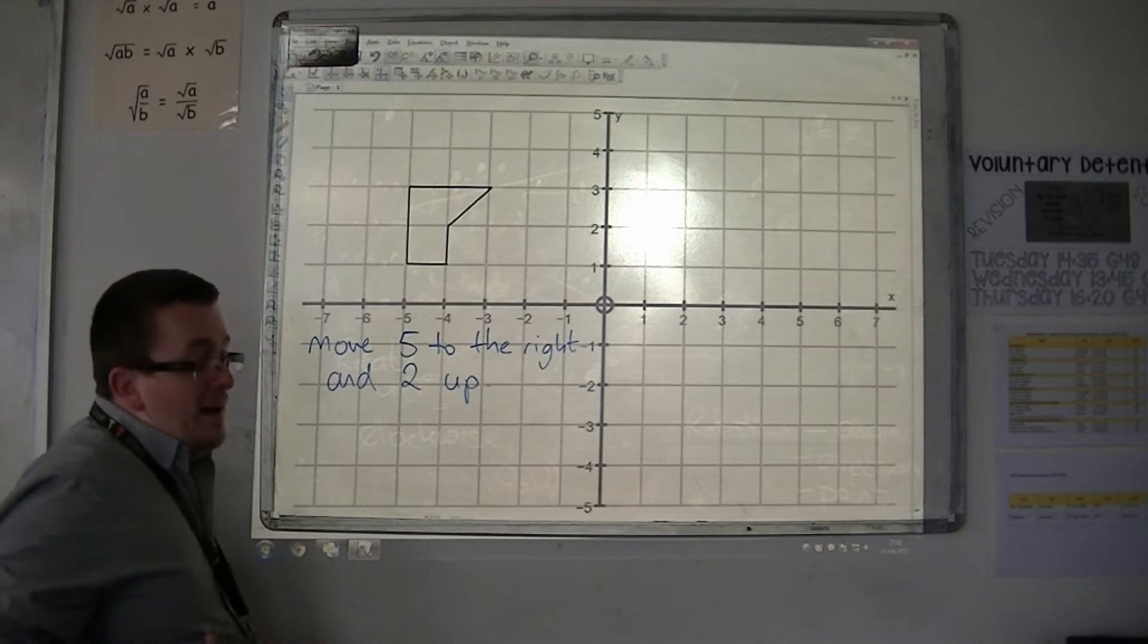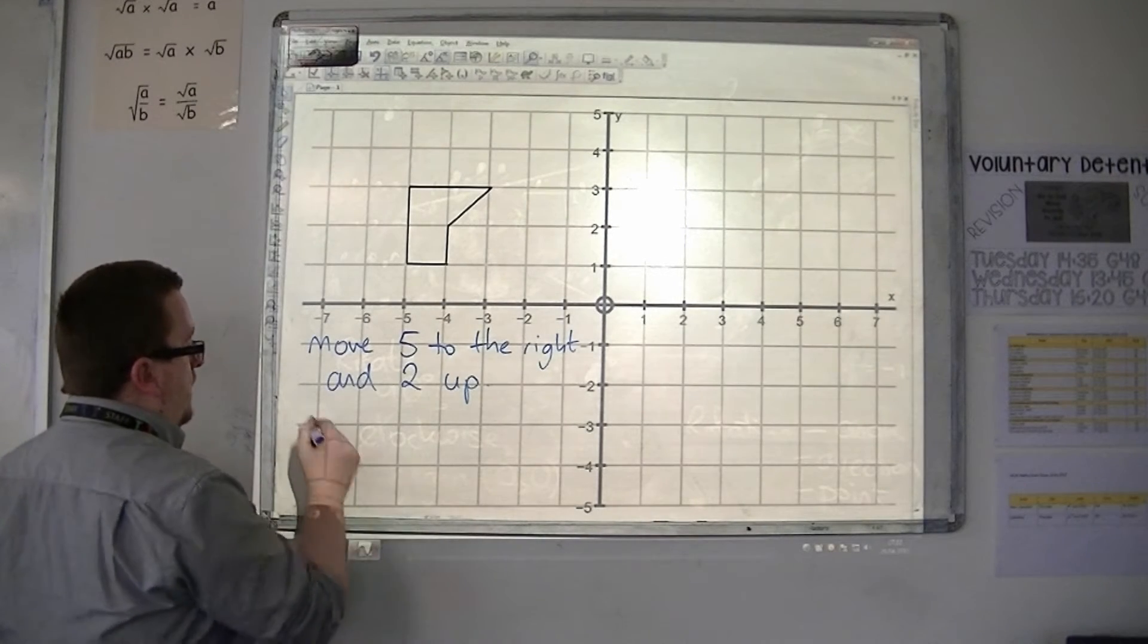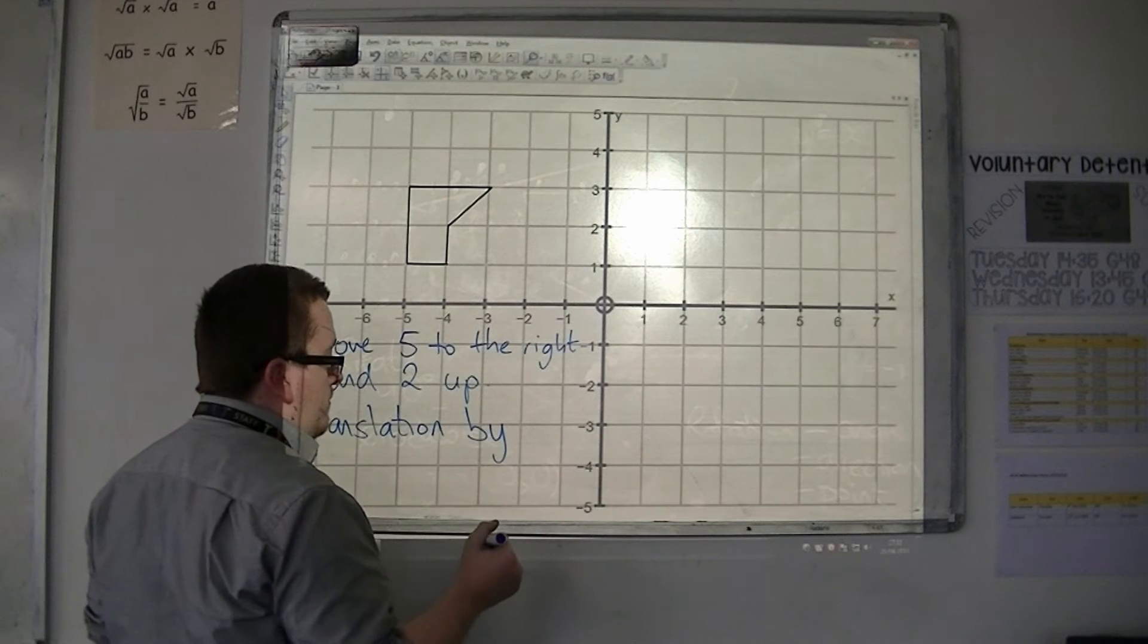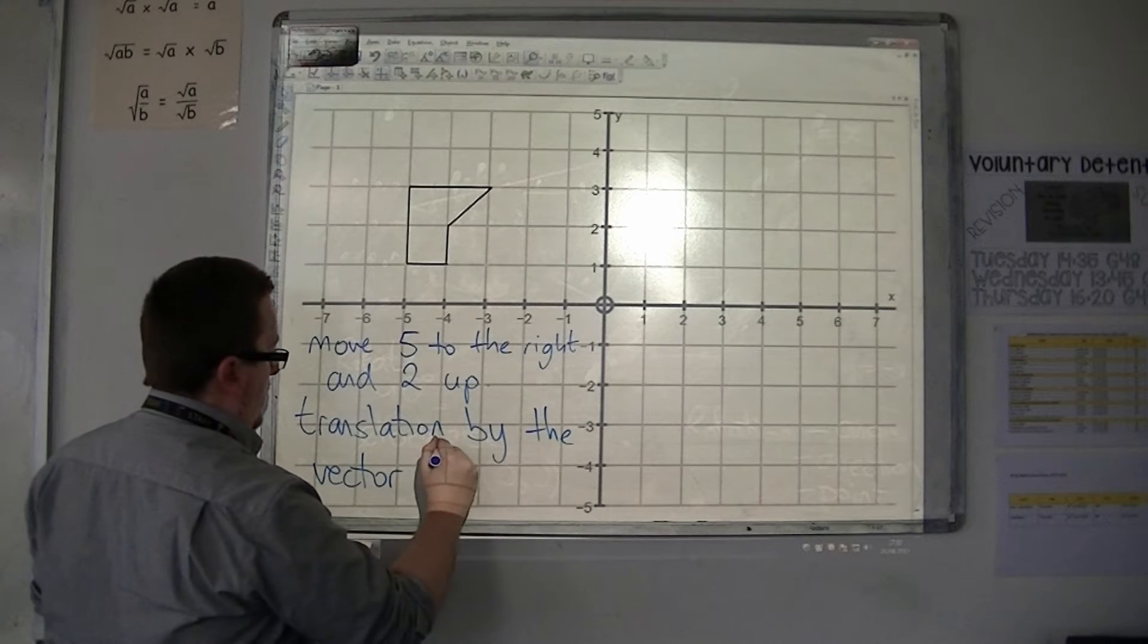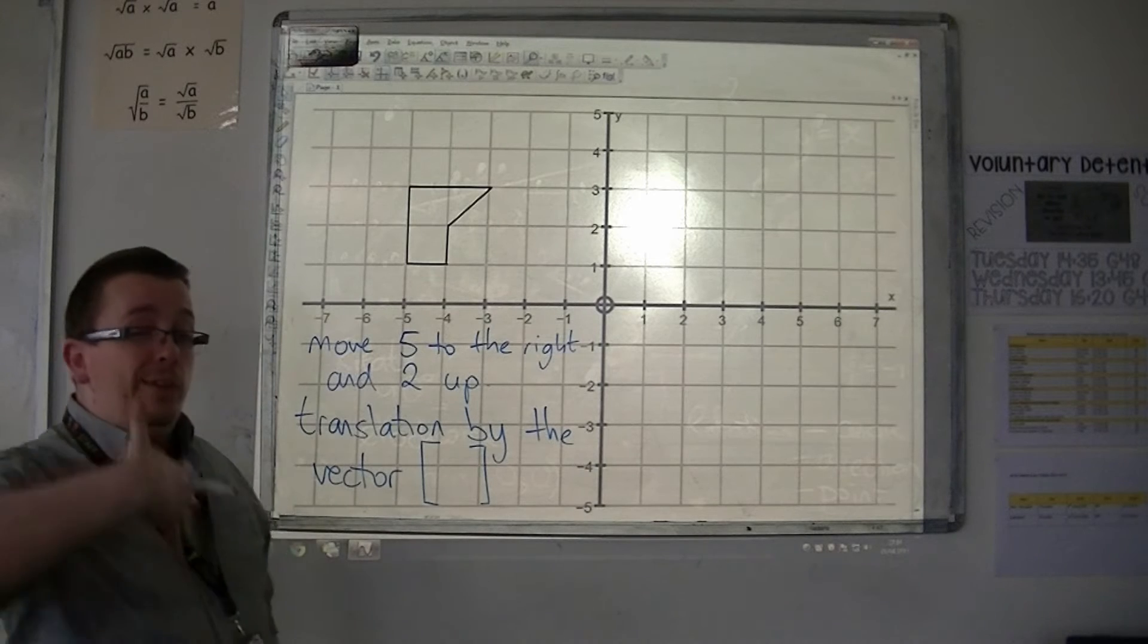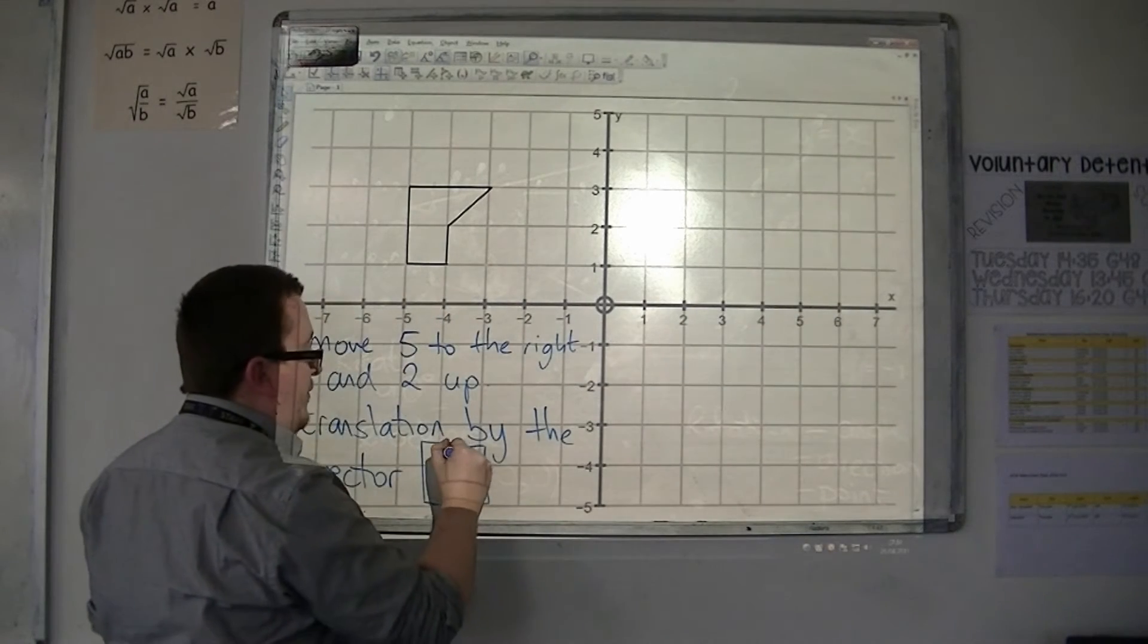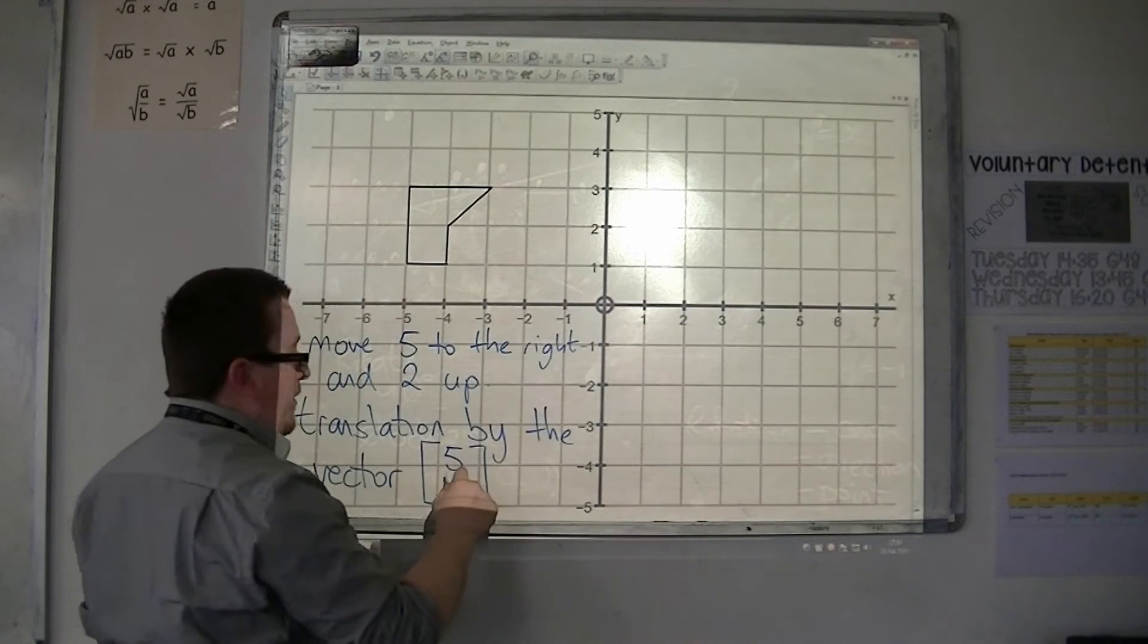If you want to be more mathematical about it, and you do need to know what this looks like, we can describe it as a translation by a vector. Now a vector is a strange looking thing in square brackets. It looks almost like coordinates. And it describes it as five to the right is in the positive direction, so it's positive five. And two is in the positive vertical direction, so it's positive two.